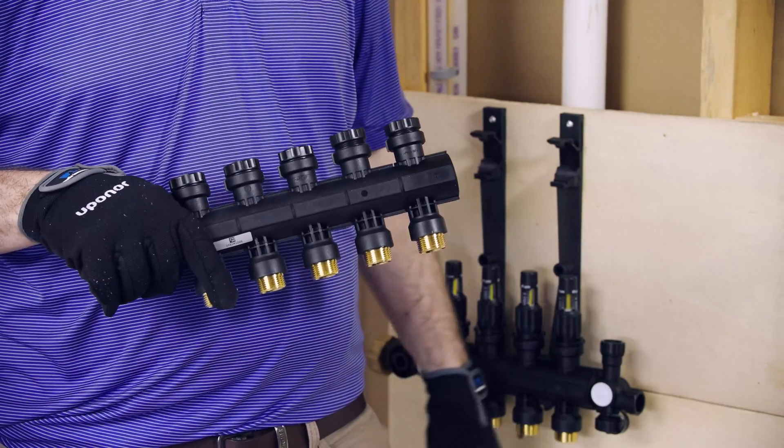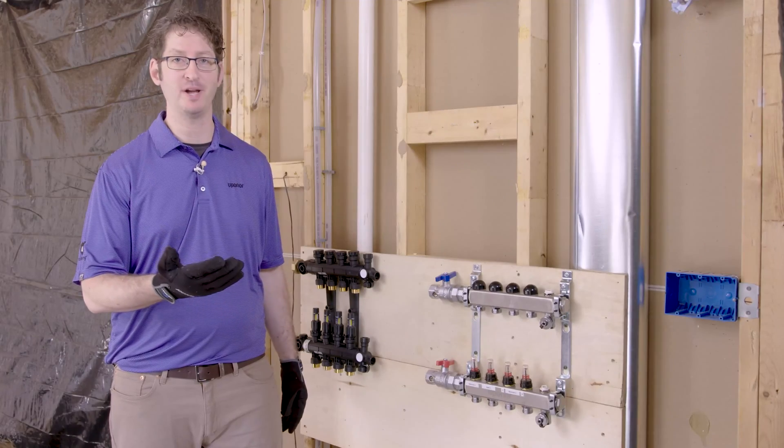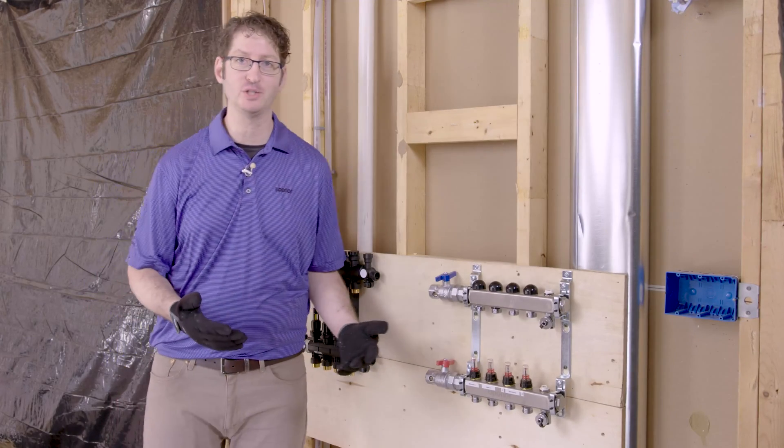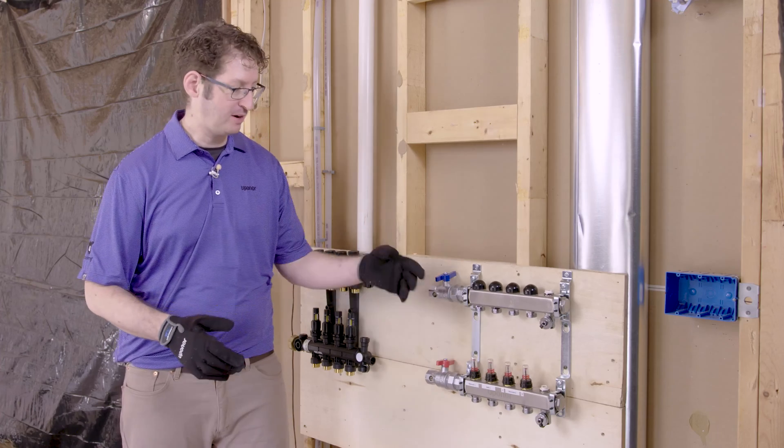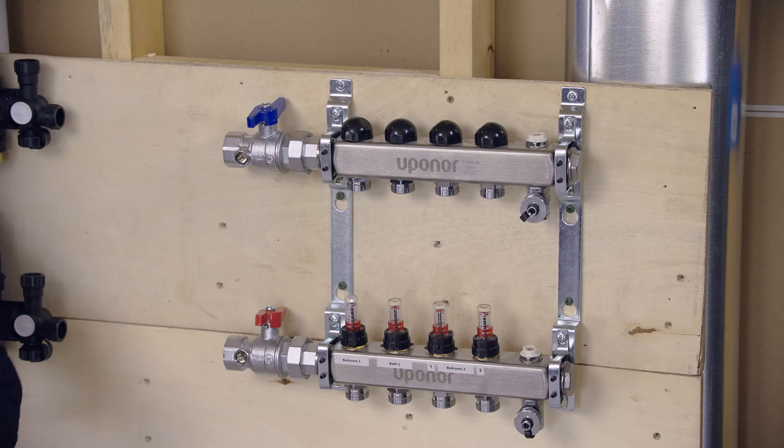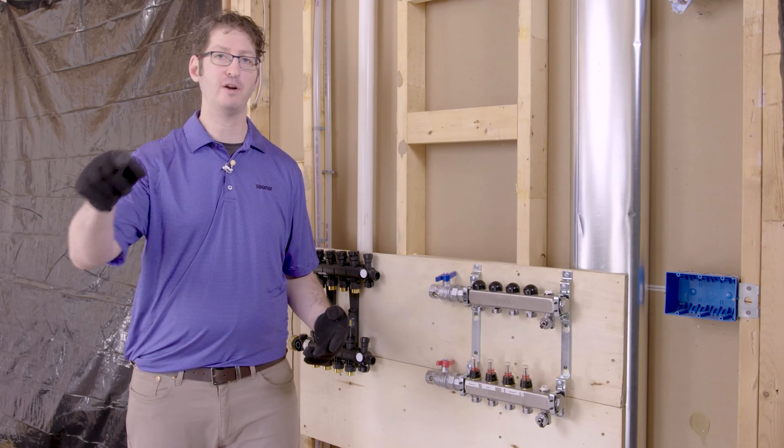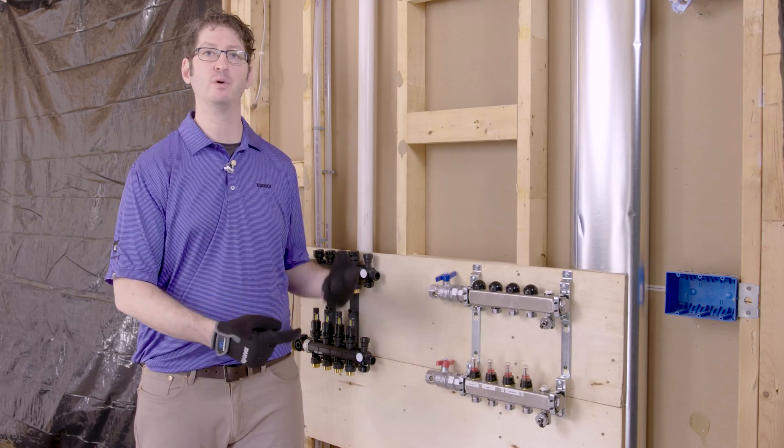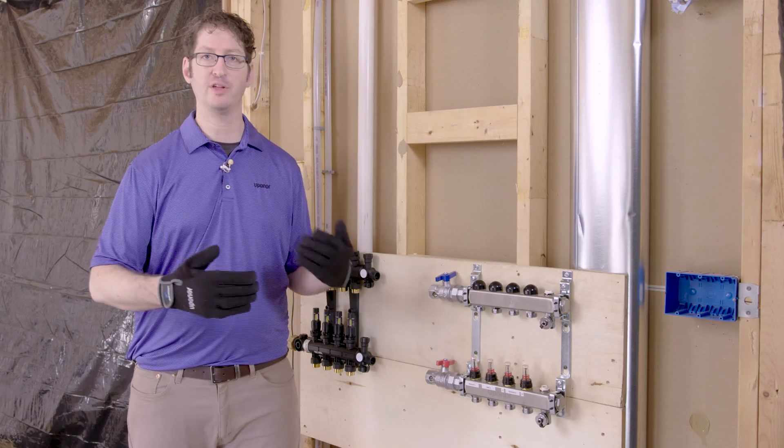Adding water to either one of these manifolds works the same way. This manifold isn't connected to a water supply, but that's not a problem. This manifold has threaded connections on both the supply and return lines where I can hook up a garden hose and run water from a hose bib into this manifold to fill it up and fill all the other loops up.